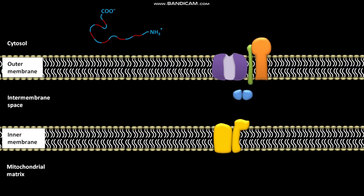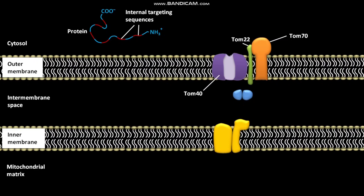Before discussing path C, let us discuss the receptors, channels, and proteins involved. A protein having multiple internal targeting sequences is present in the cytosol. The outer membrane of mitochondrion has an import receptor composed of TOM70 and TOM22, and a general import pore TOM40. Two proteins, TM9 and TM10, are present in the intermembrane space. The inner membrane of mitochondrion has a translocation channel having proteins like TM22 and TM54.